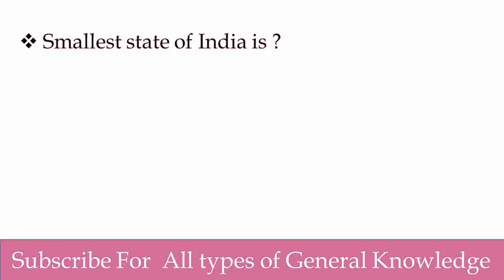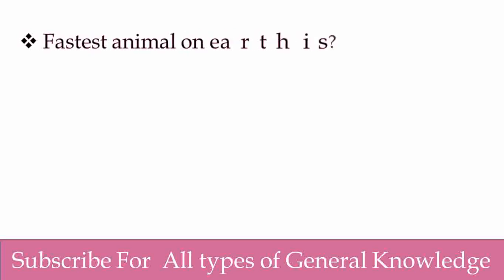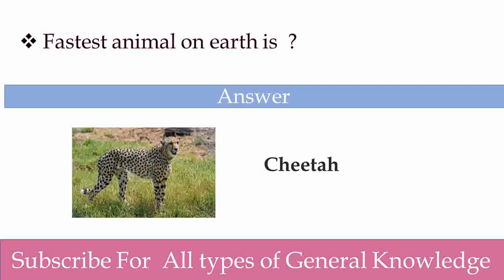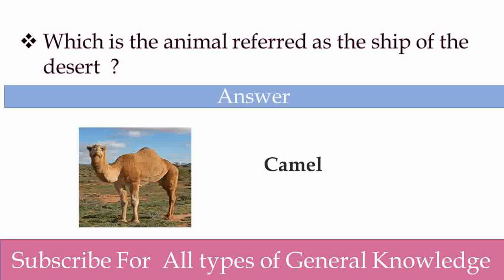Smallest state of India is? Goa is the smallest state of India. Good try. Fastest animal on Earth is? Cheetah. Good. Which is the animal referred to as the ship of the desert? Camel is the animal referred to as the ship of the desert. Good, you are trying very well.